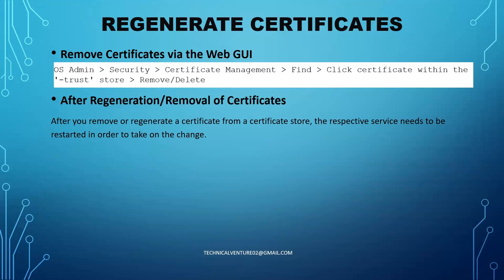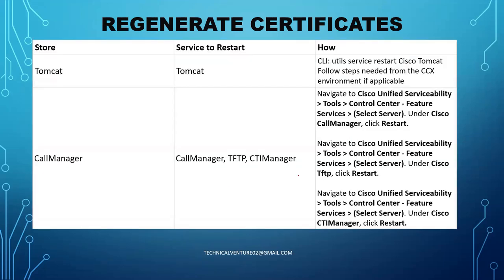To remove a certificate via the web GUI, click on the certificate within the trust store and delete it. After regeneration or removal of certificates from a certificate store, the respective service needs to be restarted for the change to take effect. For the Tomcat store, you need to restart the Tomcat service. You can do this with the CLI command: utils service restart Cisco Tomcat.